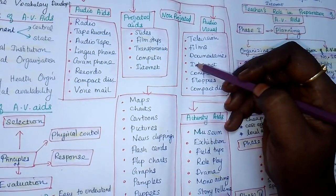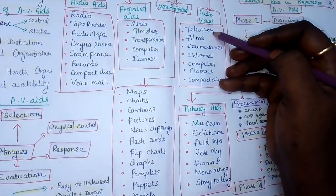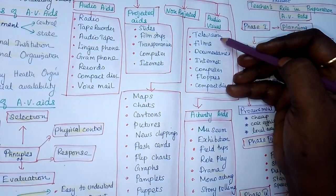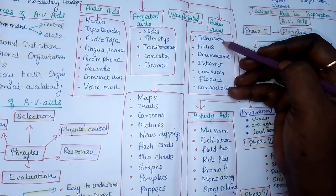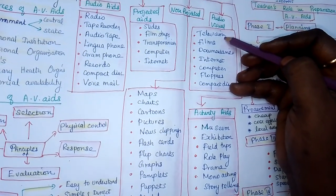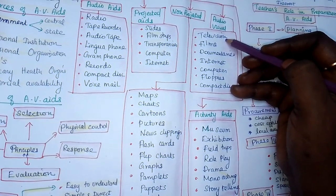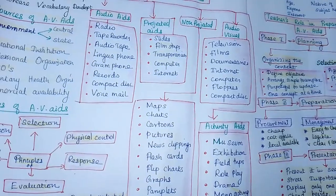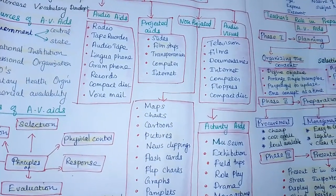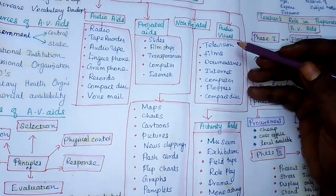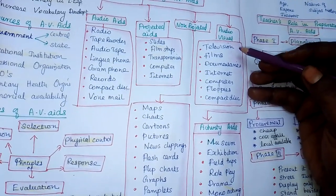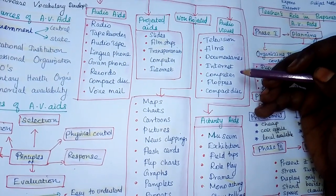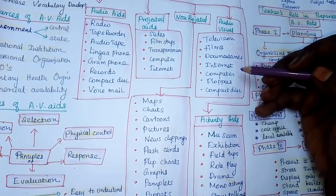For short notes on television: introduce it as a mass media communication device used even by the poorest people in the world. Write the characteristics and types — such as LED television — noting that television can now be viewed on mobile phones. Write the advantages and limitations, including the need for electrical power.